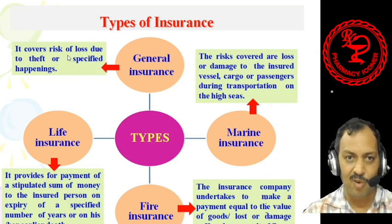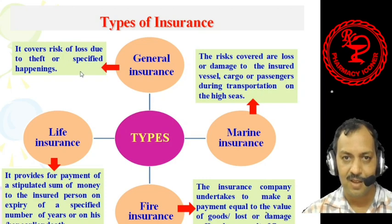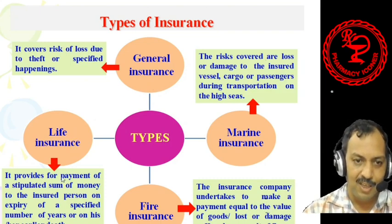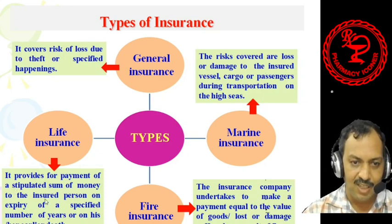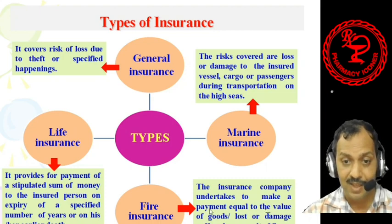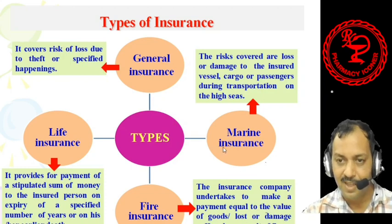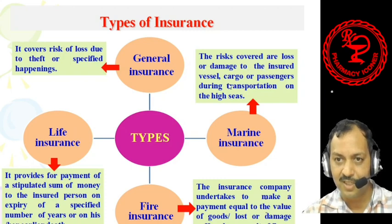General insurance covers the risk of loss due to theft or specified happenings, removing the hindrance of risk through various general causes. Life insurance involves payment of a stipulated sum of money to the insured person on expiry of a specified number of years or on earlier death. Fire insurance covers risk of fire — the insurance company pays an amount equal to the value of goods lost or damaged as a result of fire. Marine insurance covers the risk of loss or damage to the insured vessel, cargoes, or passengers during transportation on the high seas.